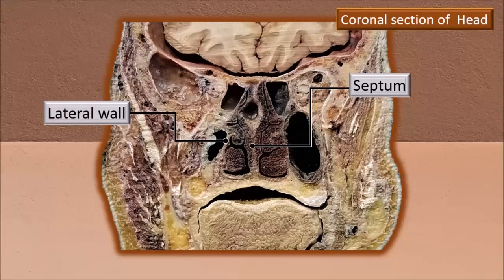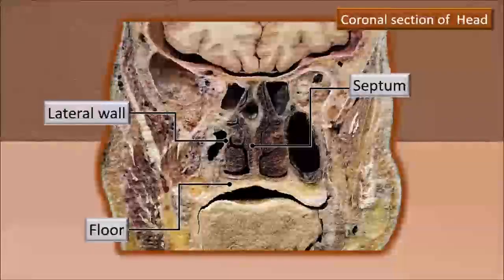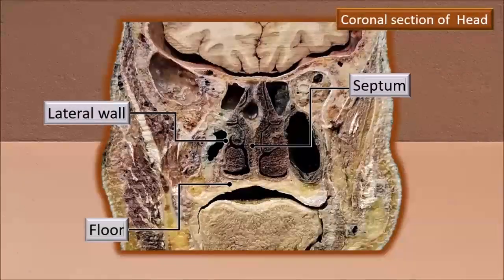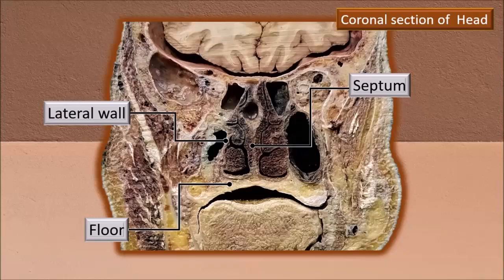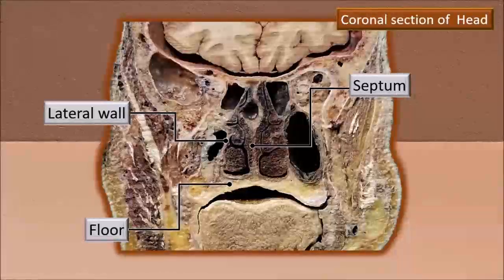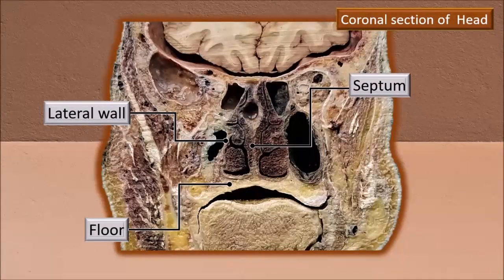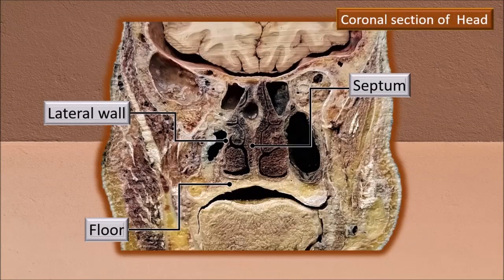Below these shelf-like projections called conchae there is a cavity. These cavities are called the meatuses. There are three conchae — inferior, middle, and superior — and correspondingly below each are the three meatuses. The floor is formed largely by the palatine process of the maxilla, with an additional contribution more posteriorly by the palatine bone.